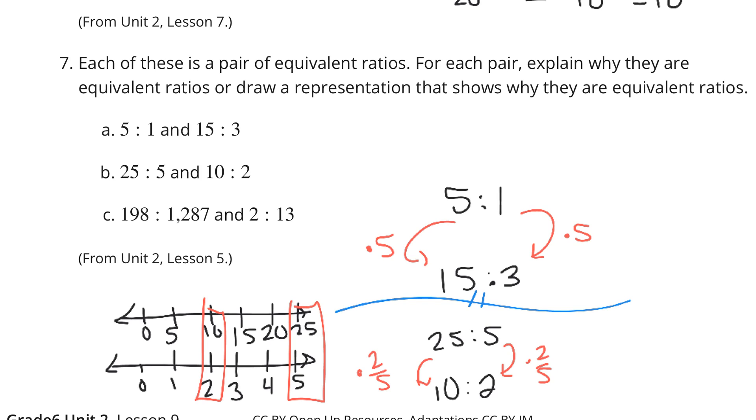And now for this last one, we're going to have 198 to 1,287 compared to 2 to 13. Now when looking at these two, I can look and go, okay, 2 times 99 is 198, and sure enough, 13 times 99 is 1,287. And so this one we're multiplying by 99 to get from 2 to 13 to 198 to 1,287.